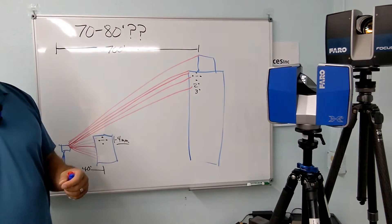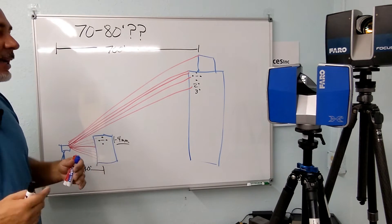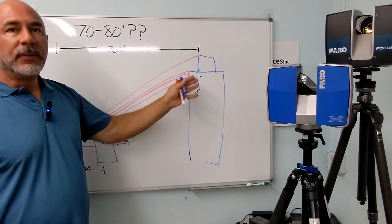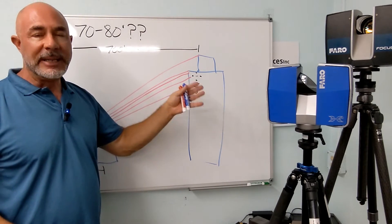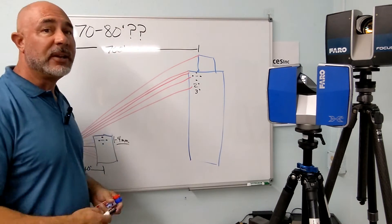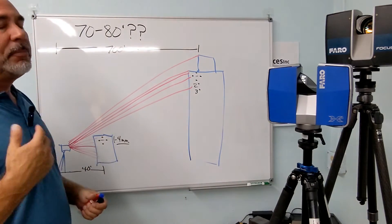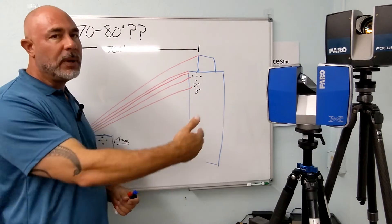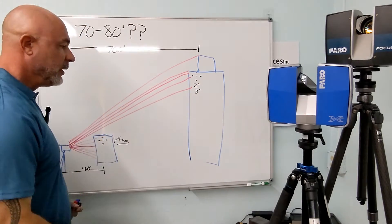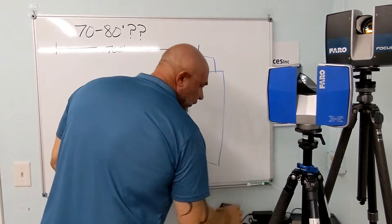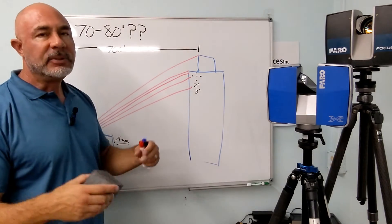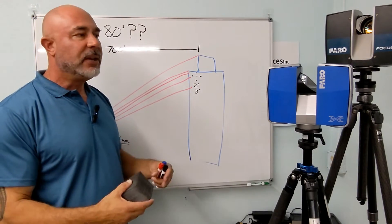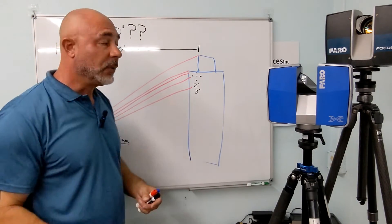Now, how does Faro compensate for this spread in laser scan points coming off of the scanner to try to give you the best possible coverage, the most accuracy, as far away as they possibly can? That's where being able to manipulate your scanner settings before you go out is going to make a difference.